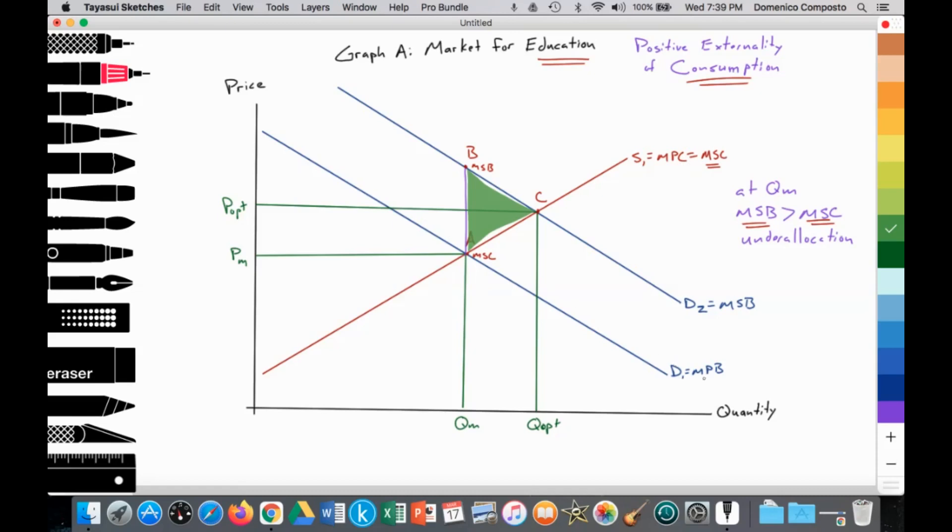And we have two downward sloping demand curves in accordance with the law of demand, D1 equal to the marginal private benefit. In the free market, where MPC equals MPB provides a free market price at PM and a free market quantity at QM. But we notice that at quantity in the free market of QM, the marginal social benefit of the consumption of education is greater than marginal social costs, signaling that there's an underallocation of resources to the production and consumption of education, and society would like more.